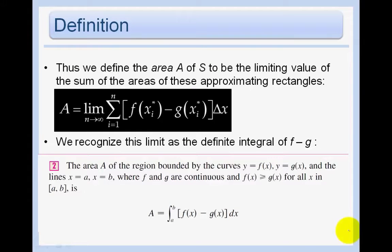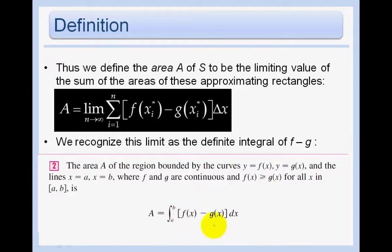In order to find the actual area, we'll find the limit as n approaches infinity, because we're trying to make as many rectangles as possible. We'll then recognize that the limit of the summation can be formalized as the integral going from a to b of the height f of x minus g of x dx, adding up all of these rectangles between a and b.